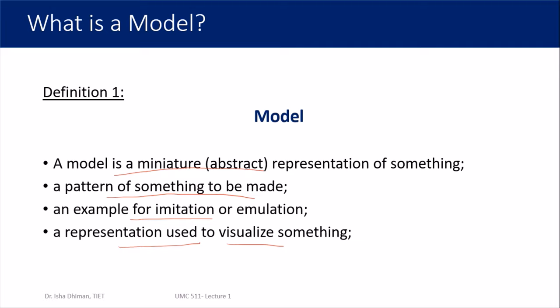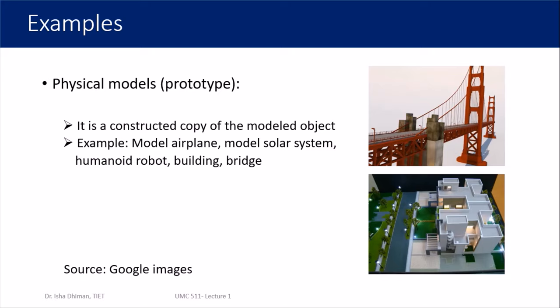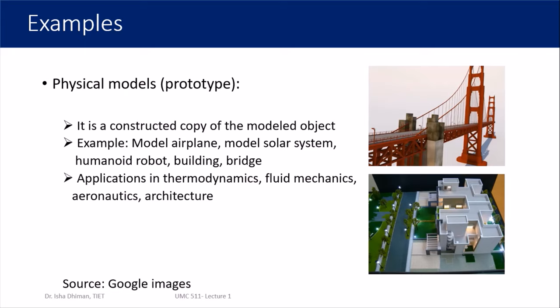There is no single well-defined definition, but all of these are different ways of understanding the word 'model'. The first example is a physical model, also known as a prototype. Physical means something you can see, touch, and feel — a constructed copy of the modeled object. Examples include a model airplane, a model of the solar system, a humanoid robot, or a model of a building or bridge. Applications are commonly in thermodynamics, fluid mechanics, aeronautics, and architecture.